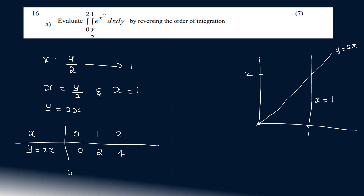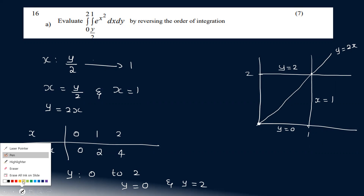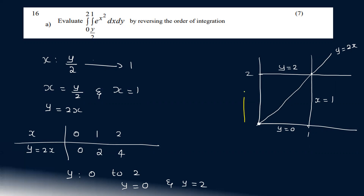Now the next region: y equals 2. You have y equals 0 and y equals 2. y equals 0 corresponds to 0, y equals 2 corresponds to 2. The range of x goes from 0 to 1.